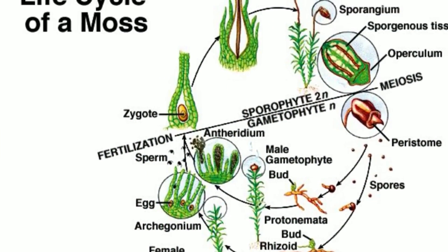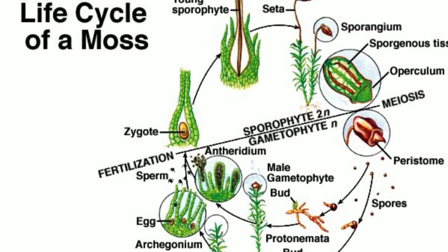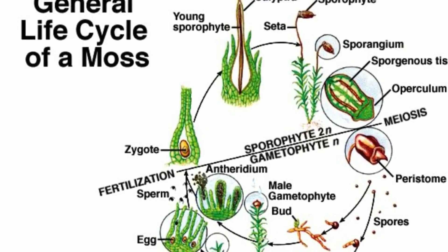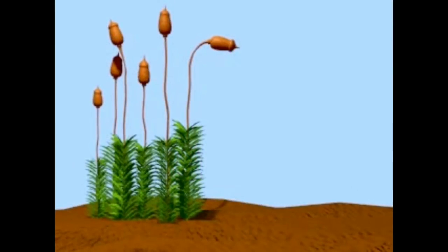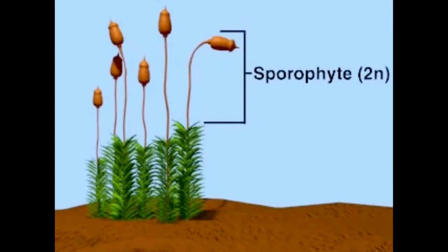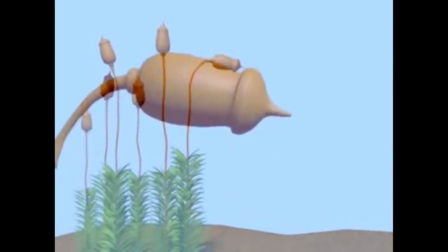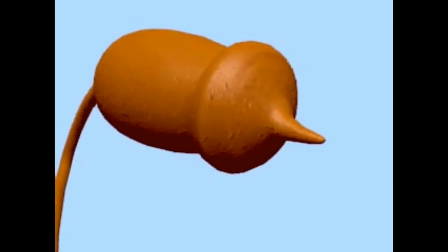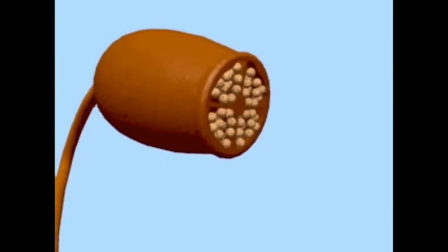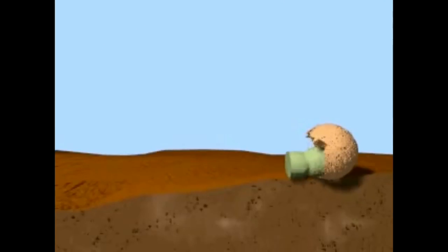Bryophytes include two successive generations called gametophyte and sporophyte, giving them an alternating life cycle. They are haploid gametophyte and diploid sporophyte. The diploid sporophyte is non-chlorophyllous and depends on the gametophyte for food and shelter. The sporophyte produces haploid spores by meiosis, and these spores on germination give rise to a haploid gametophyte.